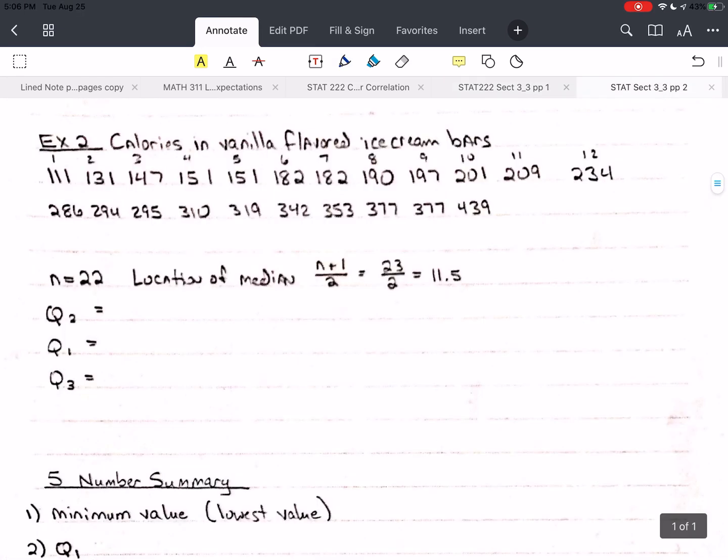So let's take a look at this. Here we have an example. And we have 22 values. I'll go ahead and number these. 13, 14, 15, 16, 17, 18, 19, 20, 21, 22.